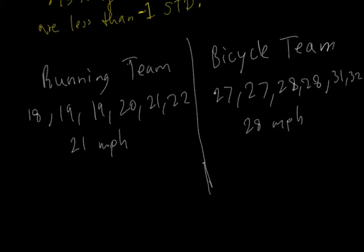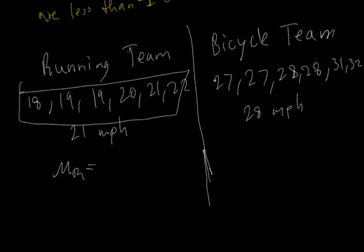And so a way for us to compare your cousin's speed relative to the other members of the teams is to compute a z-score. And so the first thing we do is compute the mean. So the mean of running is equal to the mean of these data points right here, which is 19.83, roughly.